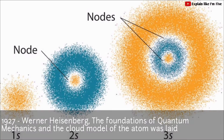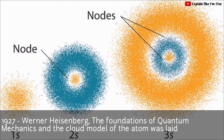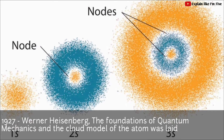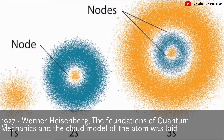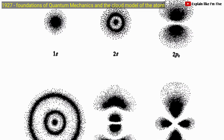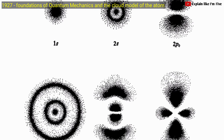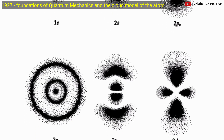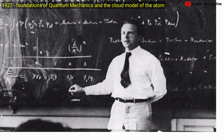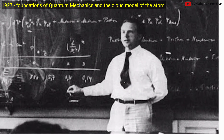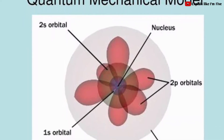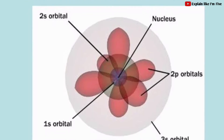In 1927, Werner Heisenberg laid the foundations of quantum mechanics and the cloud model of the atom. The uncertainty principle, stated simplistically, says that the more precisely the position of an electron is determined, the less precisely the momentum, mass, and velocity are known in that instant, and vice versa.